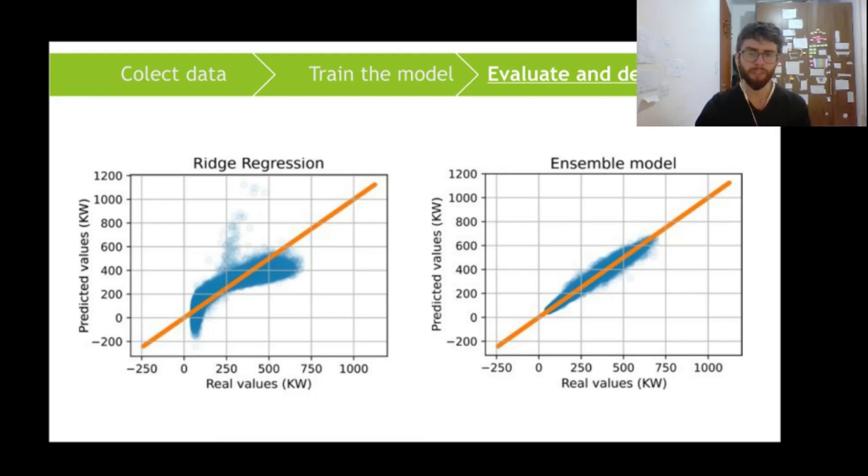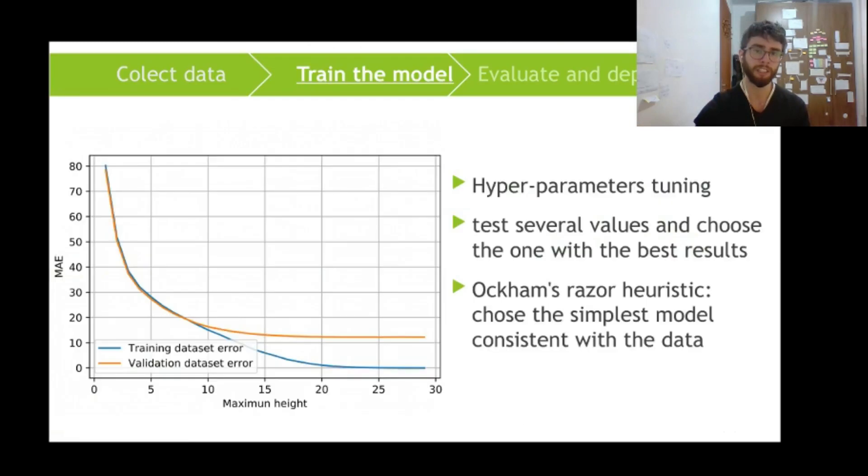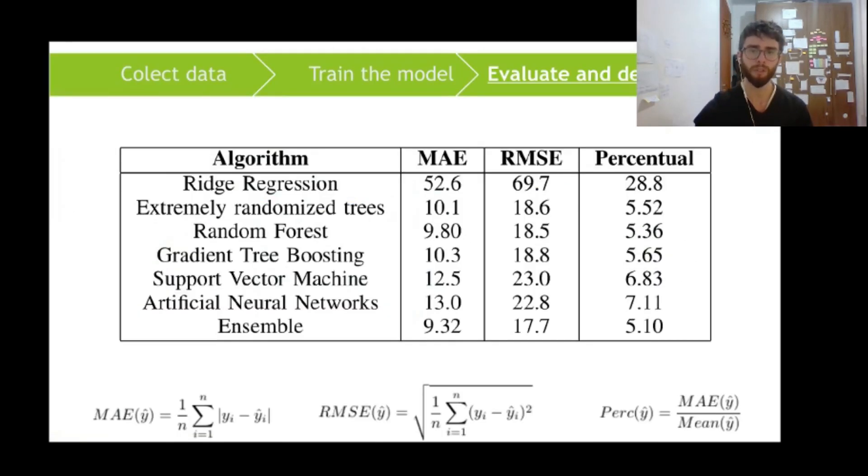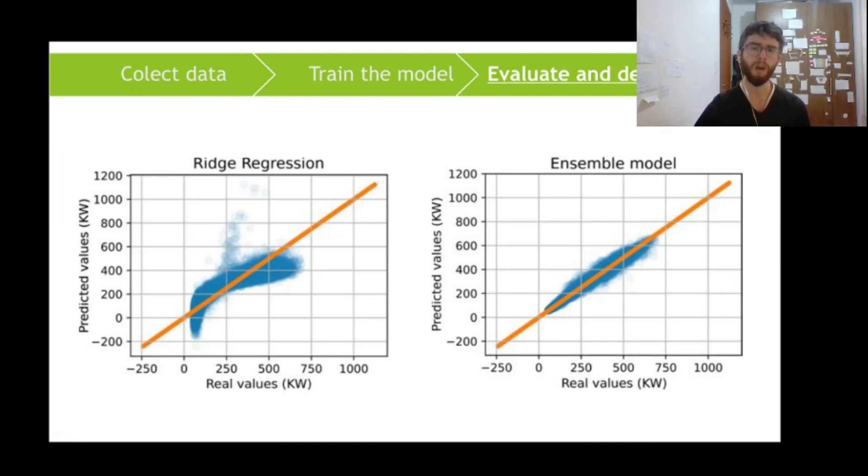And another way of evaluating the models is plotting a graph with the predicted values of the output variables and the real values because we know the real values for the test set. So we divide the data between training and test. And for both data sets, we know the output variable, the power consumption. So we can evaluate how well did the model predict in the test data set.